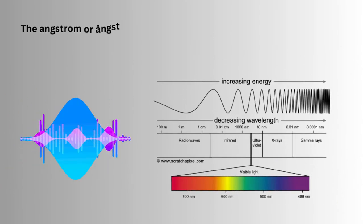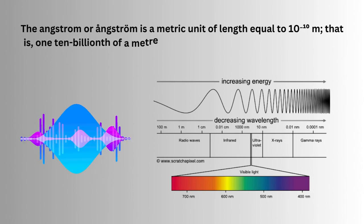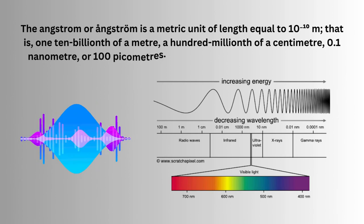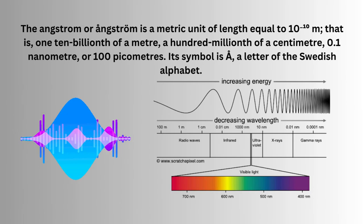The angstrom is a metric unit of length equal to 10^-10 m, that is, one ten-billionth of a meter, one hundred-millionth of a centimeter, 0.1 nanometer, or 100 picometers. Its symbol is angstrom, a letter of the Swedish alphabet.